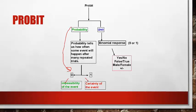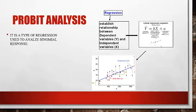Probit is actually a type of regression analysis that establishes a relationship between two variables. The unit of this analysis is the binomial response, meaning it has two possibilities — like yes or no, true or false, male or female, positive or negative results of disease.